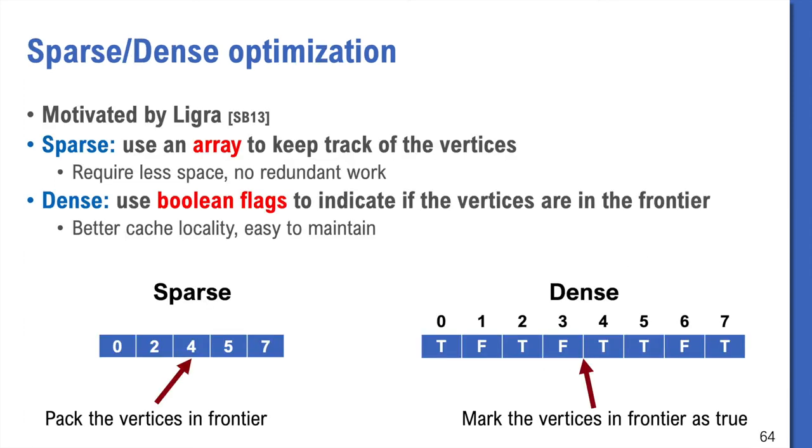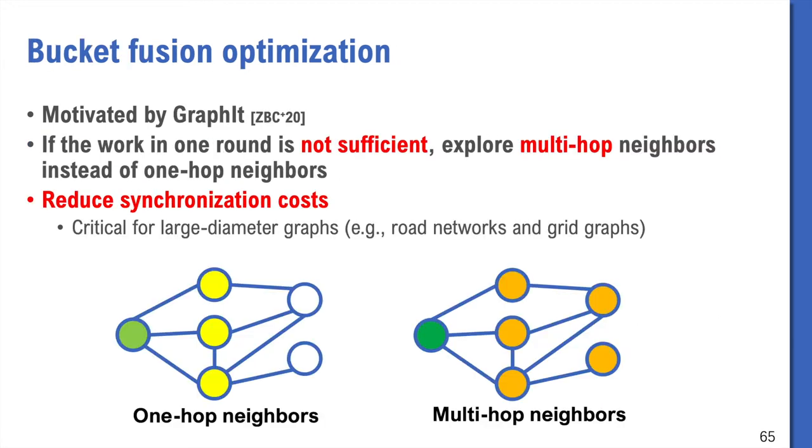We use sparse-dense optimization. It's inspired by LIGRA. Basically when the frontier is small, we use an array to keep track of the vertices. And when it's large, we use boolean flags to indicate if the vertices are in the frontier. We also use the bucket fusion optimization in our implementations. It's motivated by Graphite. If progress is not sufficient in one step, instead of exploring one-hop neighbors, we explore multiple-hop neighbors. This can reduce synchronization cost. So it's critical for large-diameter graphs.